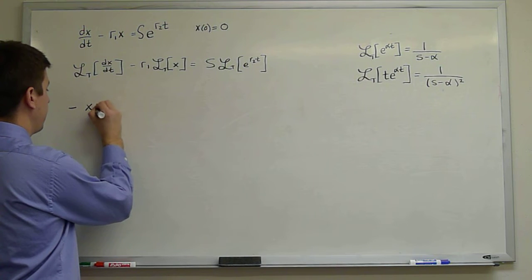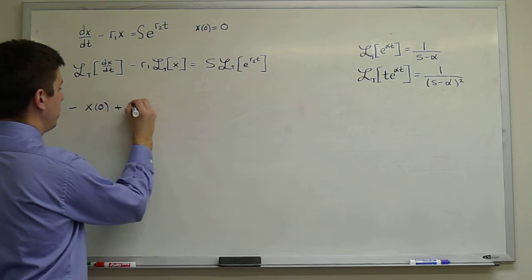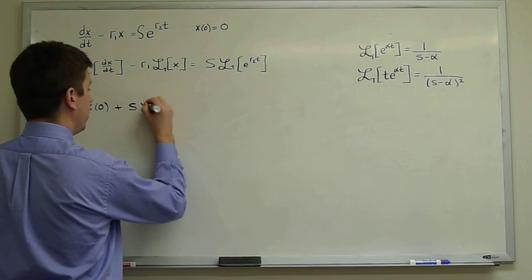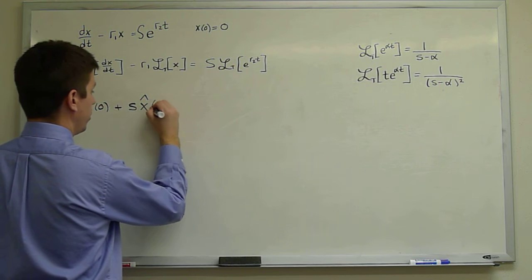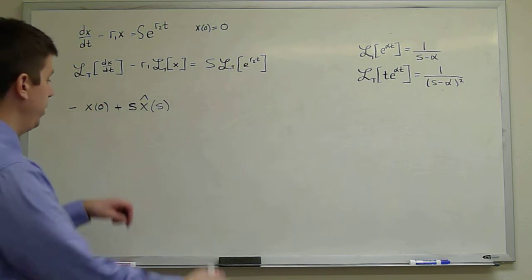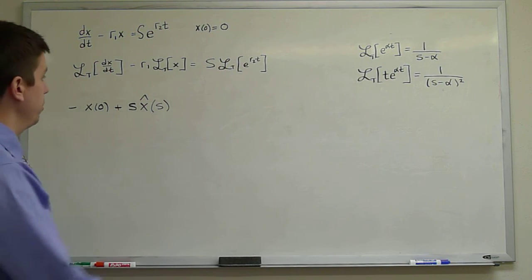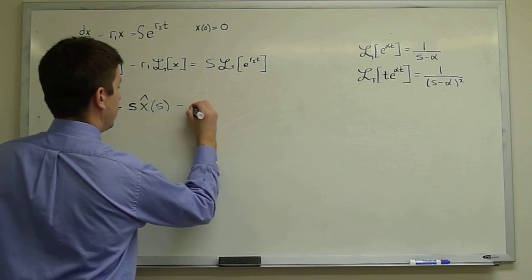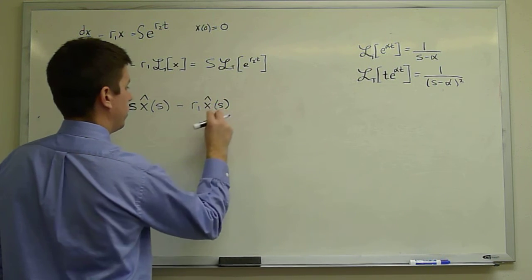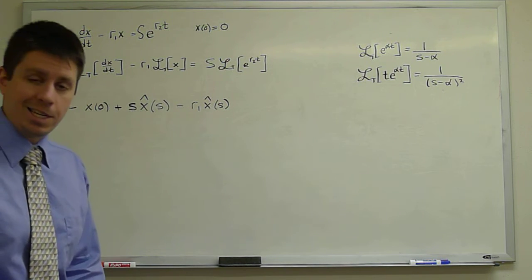We get minus x(0) plus the Laplace variable S times the transformed solution x̂(S), which at this point is still unknown. This is what becomes of the first derivative when we take the Laplace transform. Then minus R1 times x̂(S), which is how we write the Laplace transform of x(t).